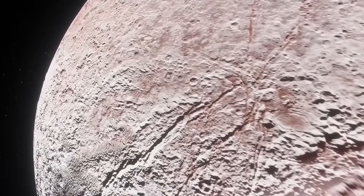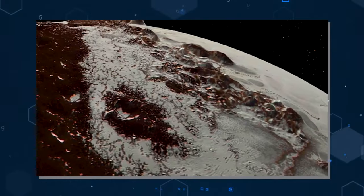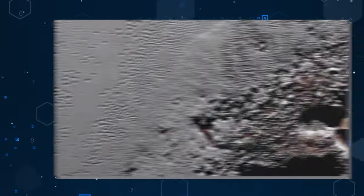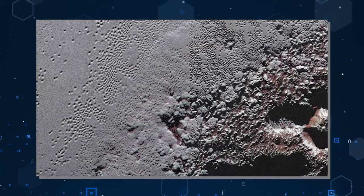This mantle, in turn, is sheathed by a crust comprising a mixture of crystallized gases such as nitrogen, methane, and carbon monoxide.